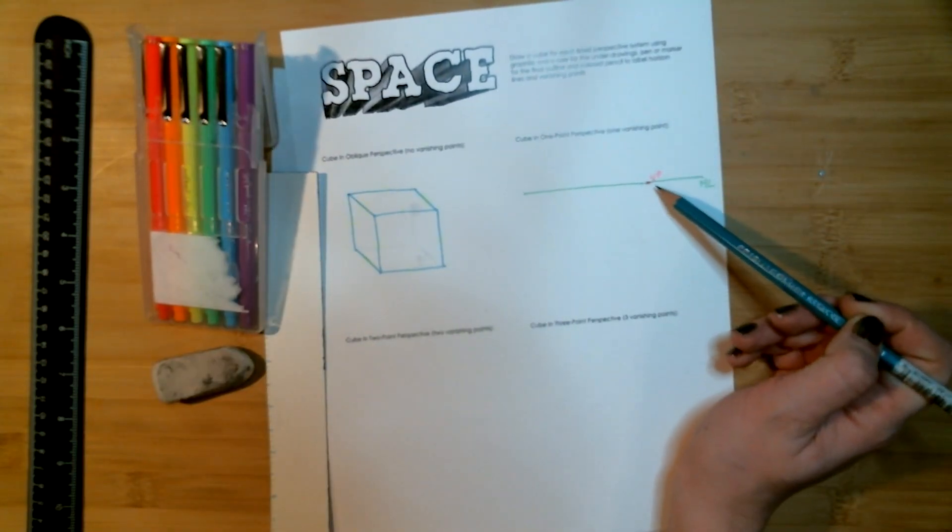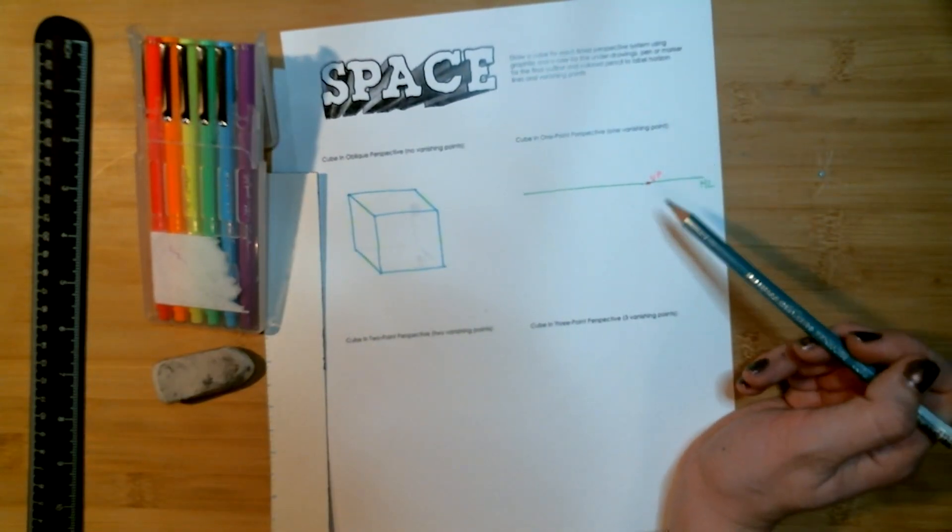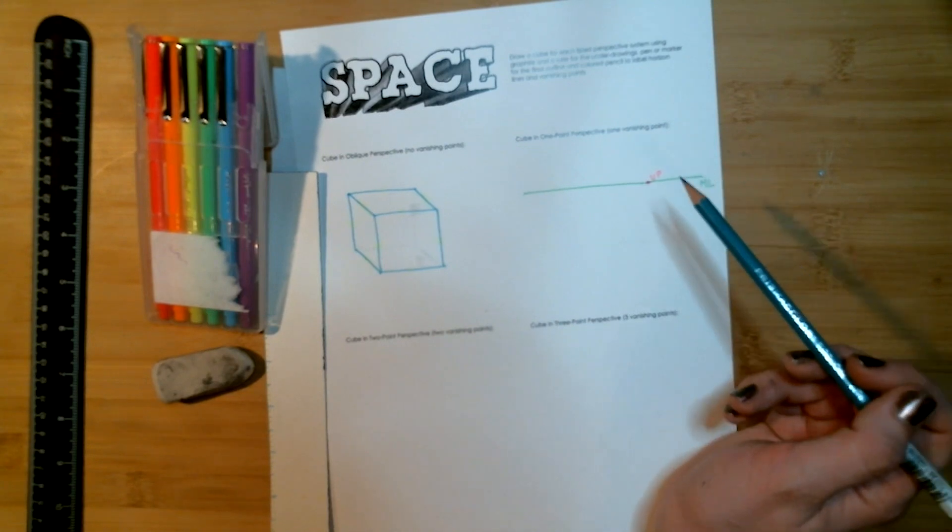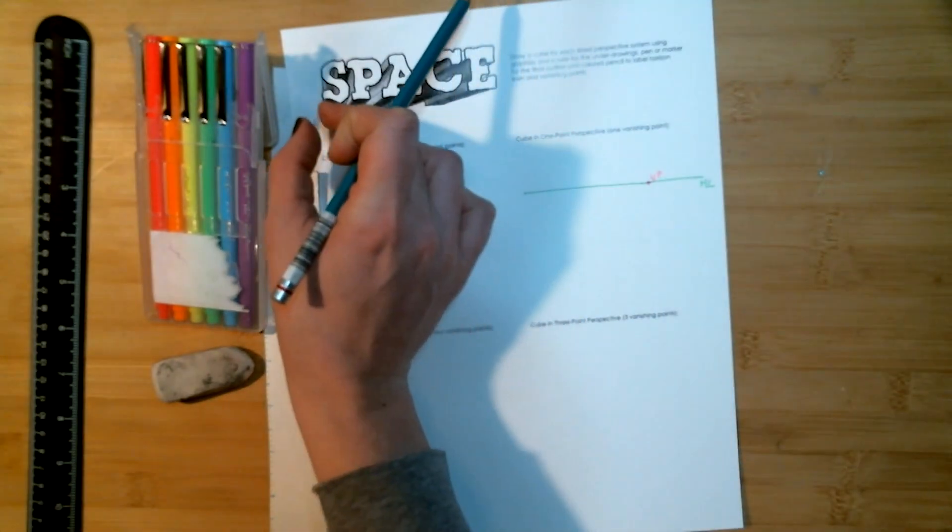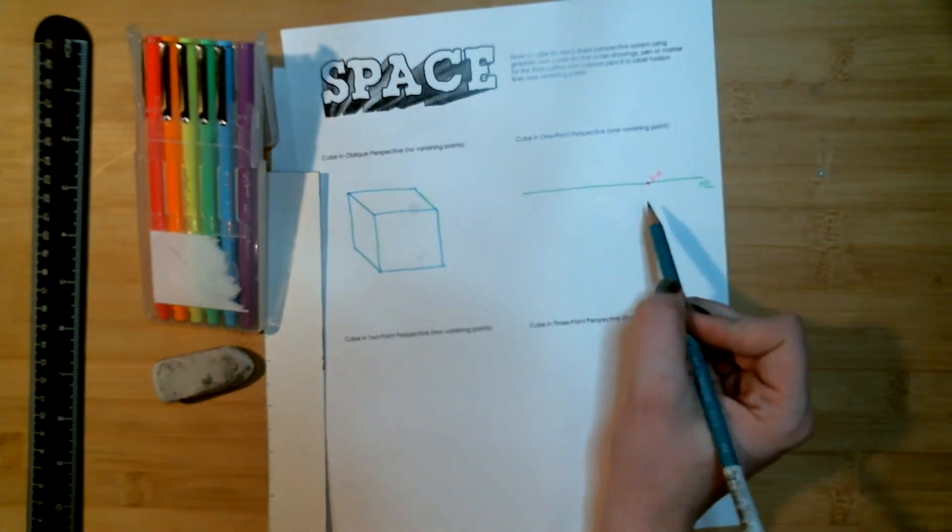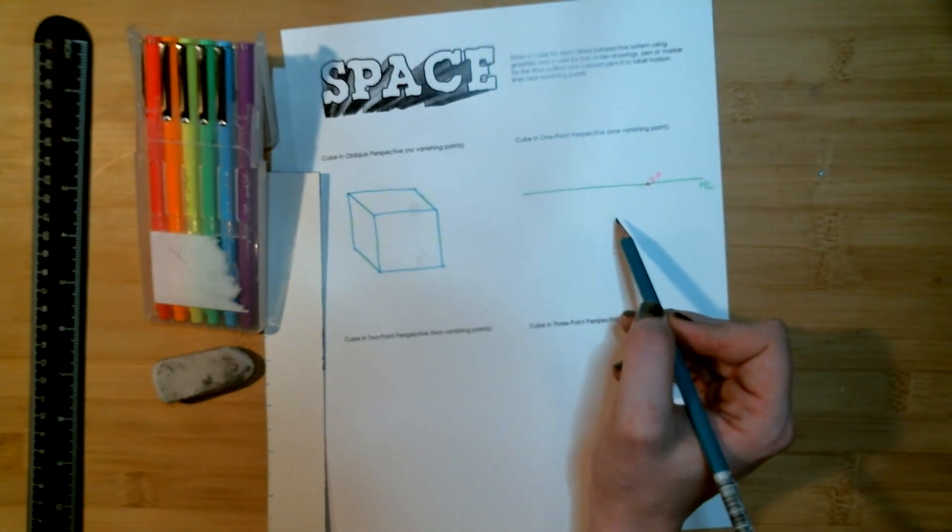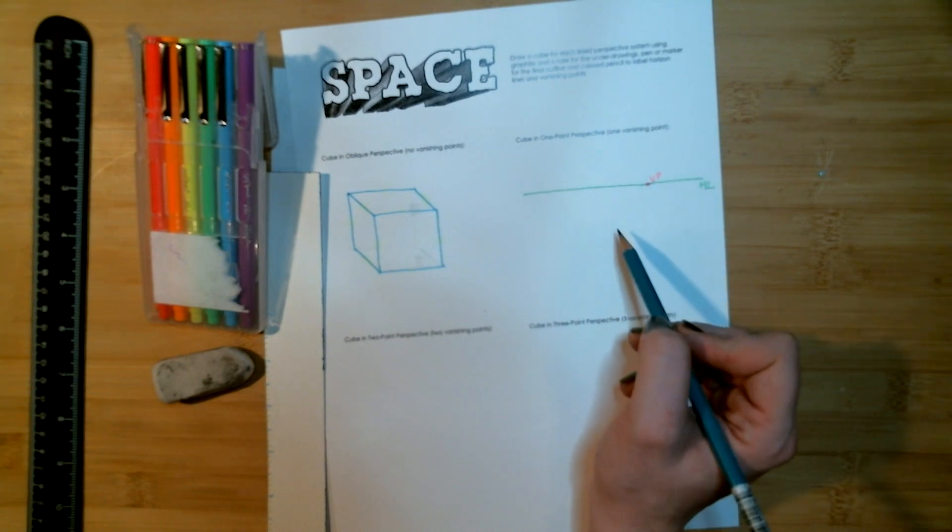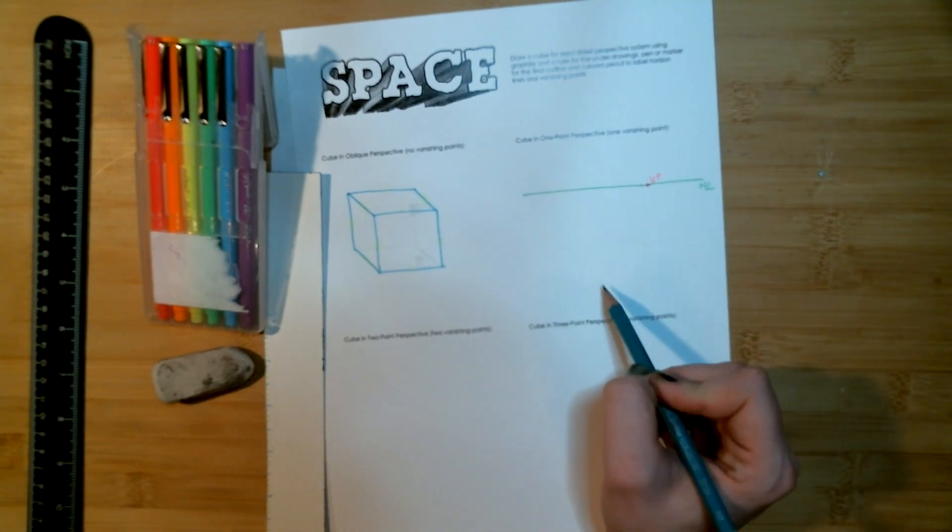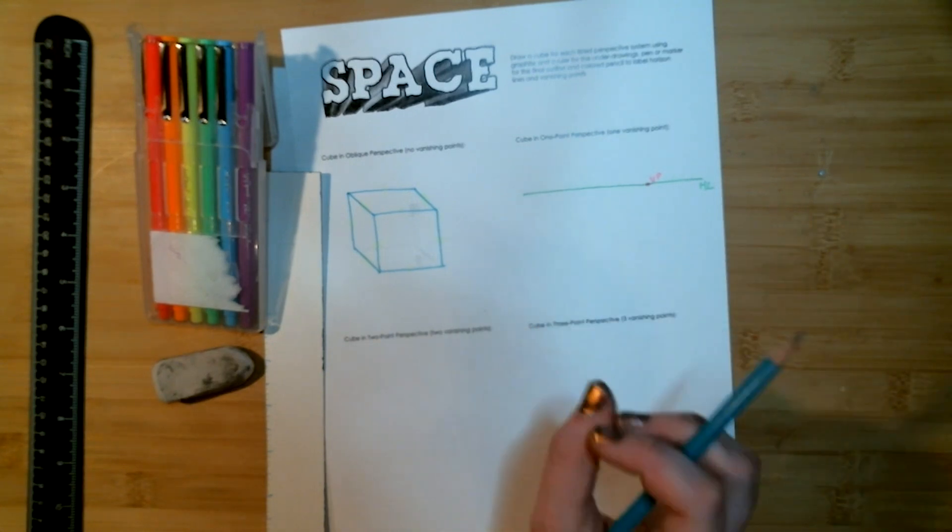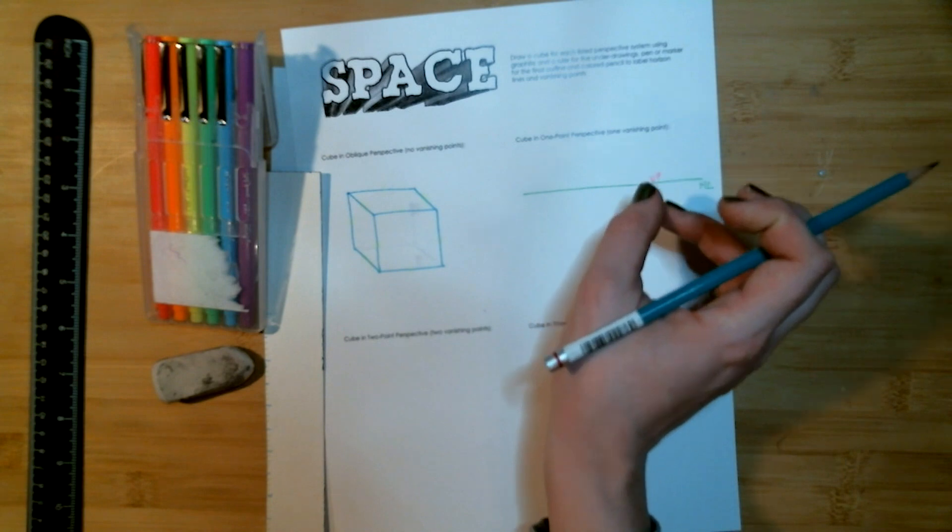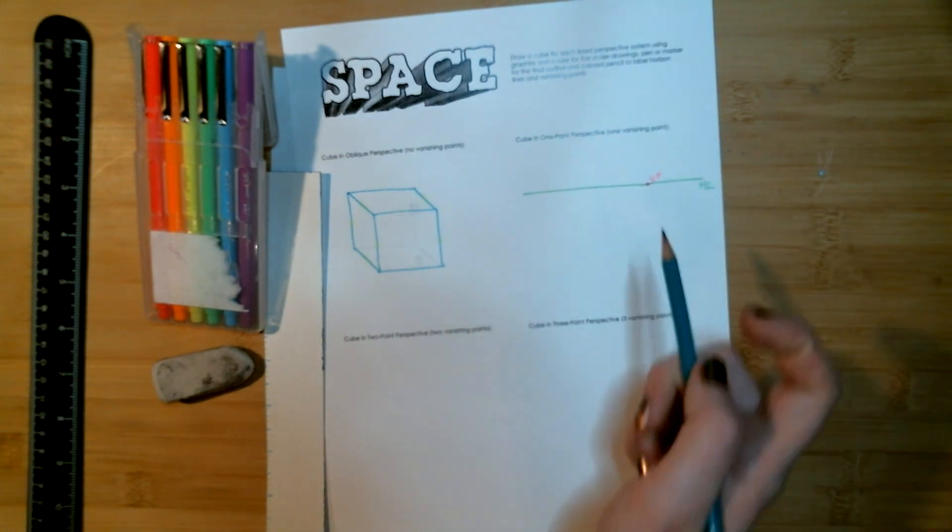So now that we've added one vanishing point we're going to lose one set of parallel lines because the lines that were going backwards in the cube are now going to converge towards a vanishing point so it's going to start to look more realistic and less flat. First thing we'll do is we'll draw the face of the cube. The face will still retain its parallel lines because the only thing that is going towards a vanishing point is that backwards third dimension.